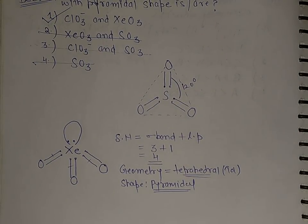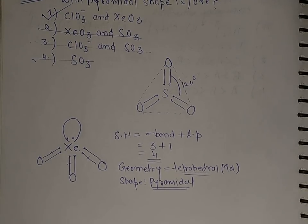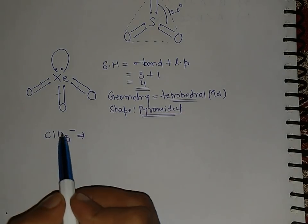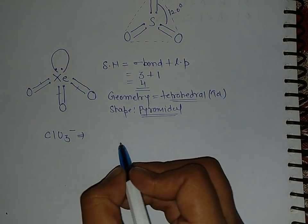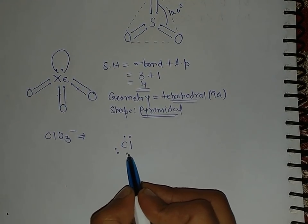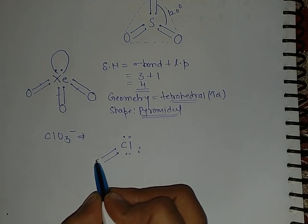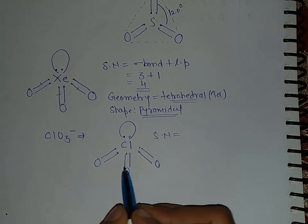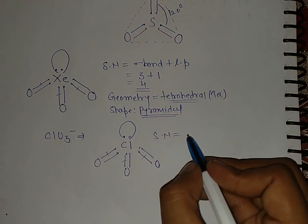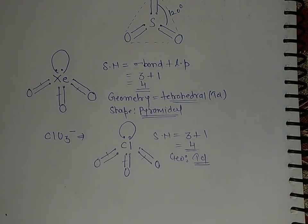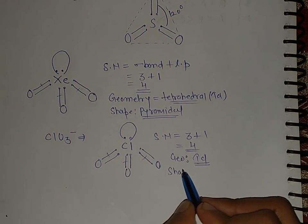Now look at the chlorate ion, ClO3⁻. Chlorine has seven valence electrons, and the negative charge makes it eight valence electrons total. With a double bond, two oxygens, and one lone pair: steric number = three sigma bonds plus one lone pair = four. That means the geometry is tetrahedral. Ignoring the lone pair, the shape is pyramidal.